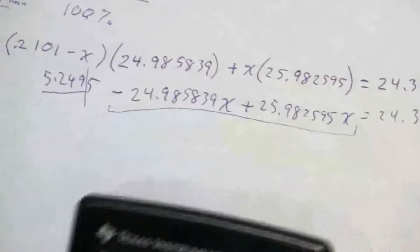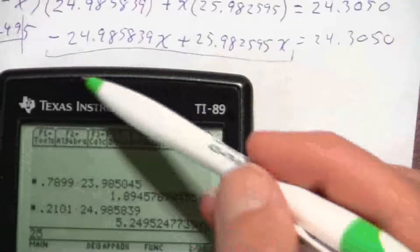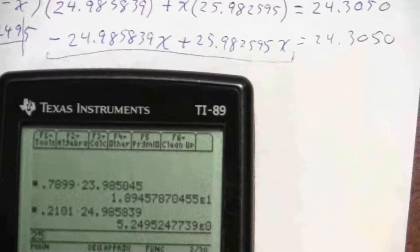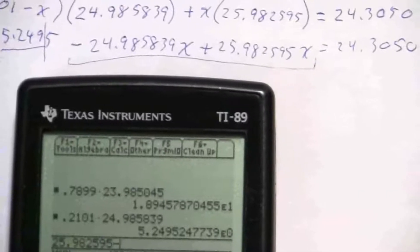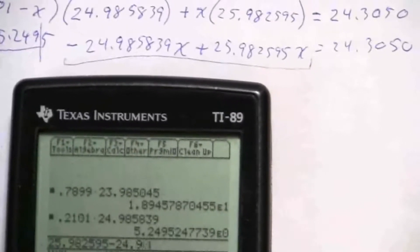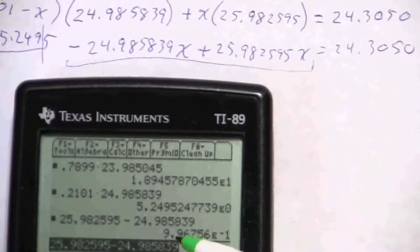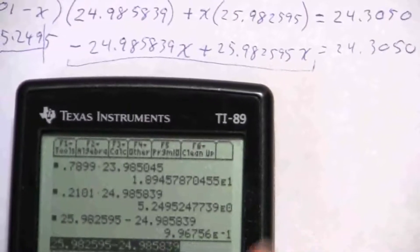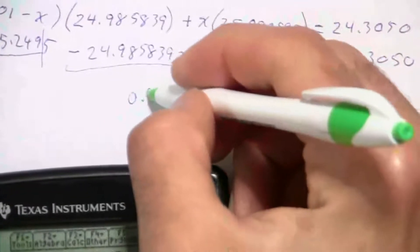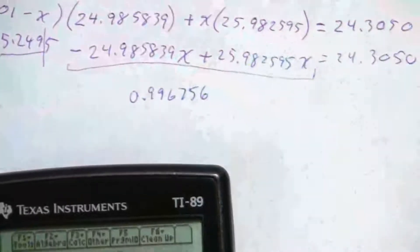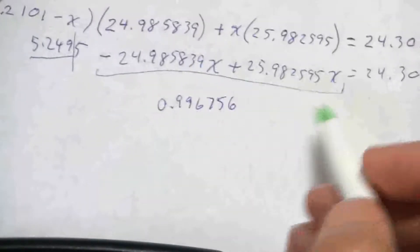So I have here, this is a negative, so I'm going to start with the 25.982595 minus the 24.985839, and I get times 10 to the minus 1, so that's 0.996756. But that's times x.